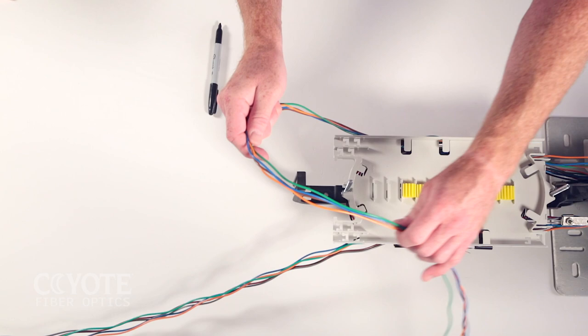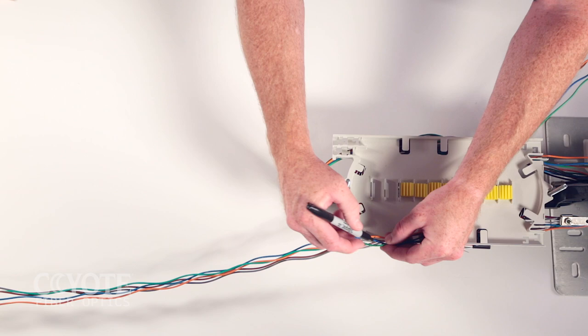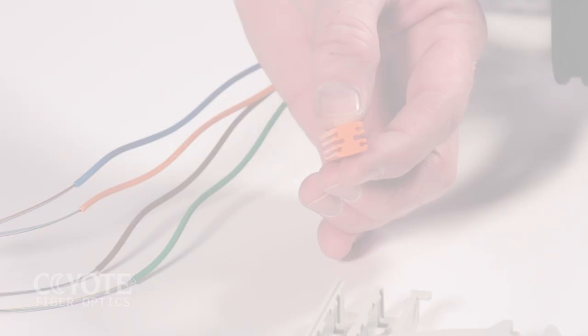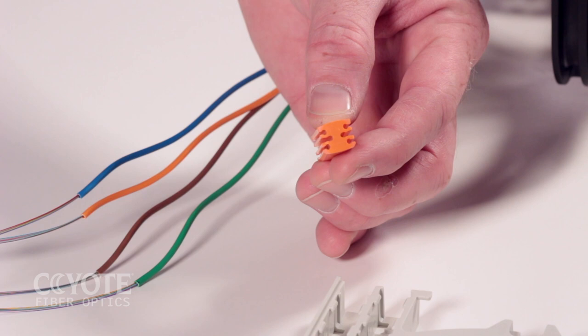Mark the opening location with a permanent marker. Repeat this process on the other side. Remove the buffer tube per your company's practice to expose the fibers.